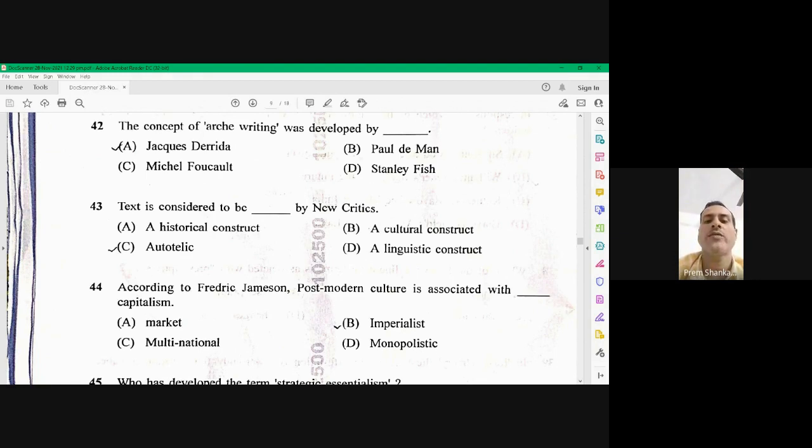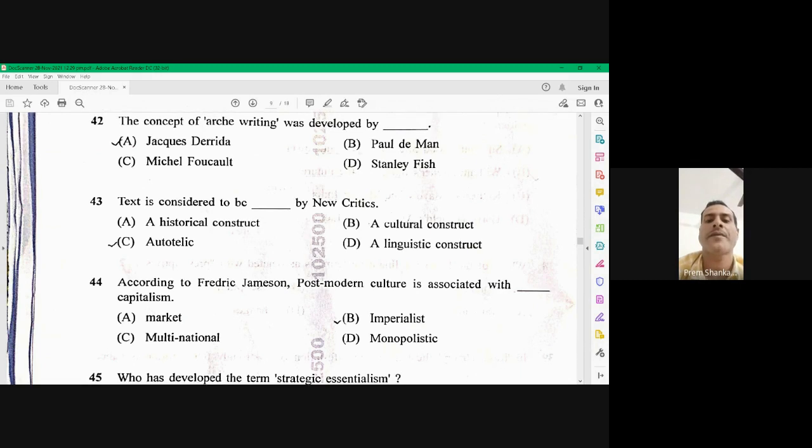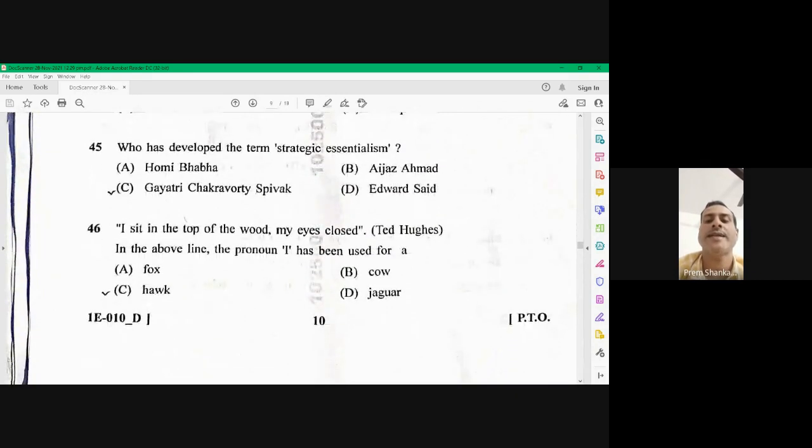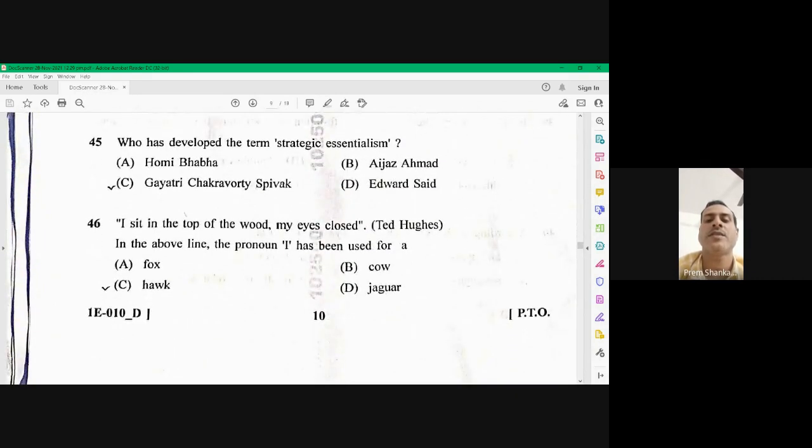Question number 44, according to Frederick Jamsen, postmodern culture is associated with imperialist capitalism. Imperialist capitalism is the right answer here. Question number 45, who has developed the term strategic essentialism? This term was coined by pushclonal author Gayatri Chakravarti as Pivak. So 45 is C is the right option.